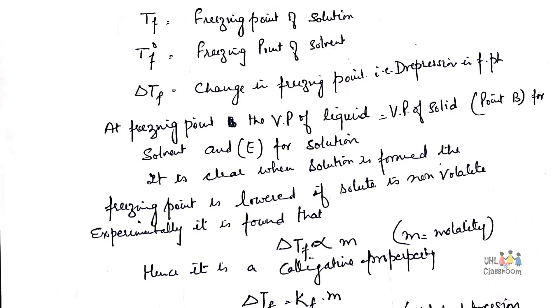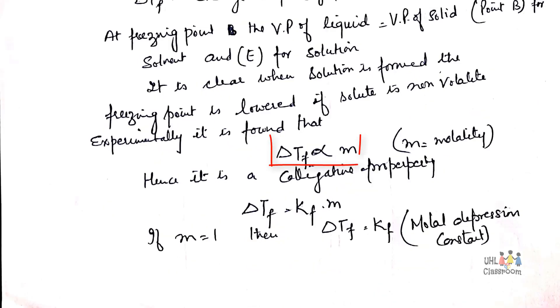At freezing point, vapor pressure of a liquid will become equal to the vapor pressure of solid. Experimentally, it is found that delta Tf is equal to M, where M is molarity.